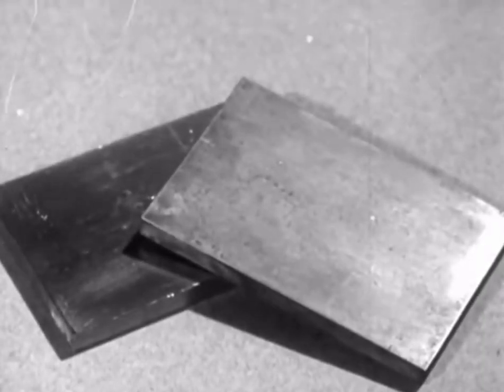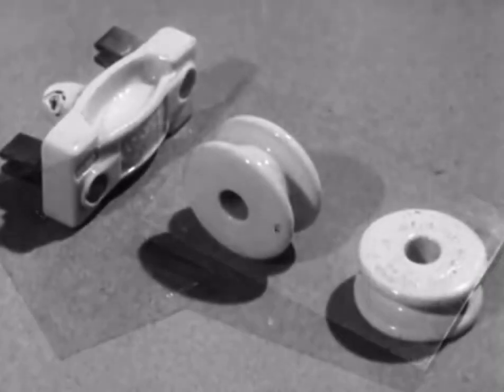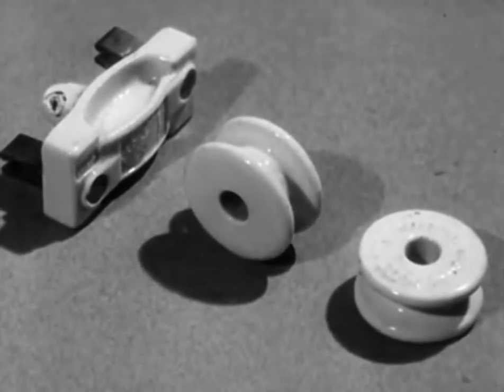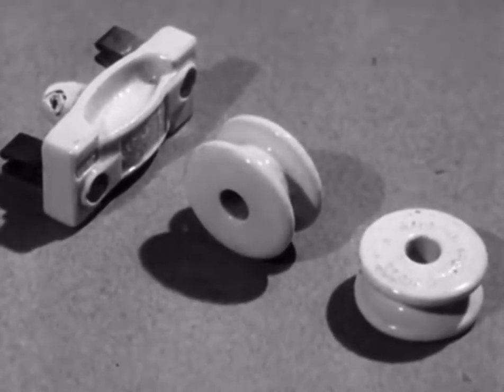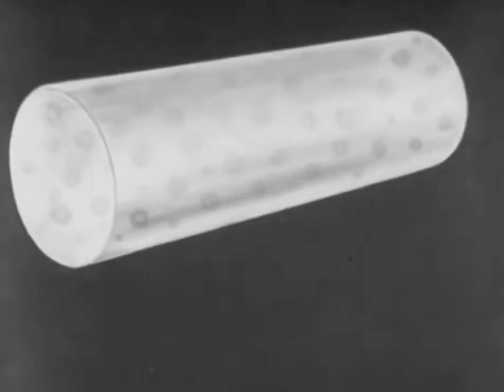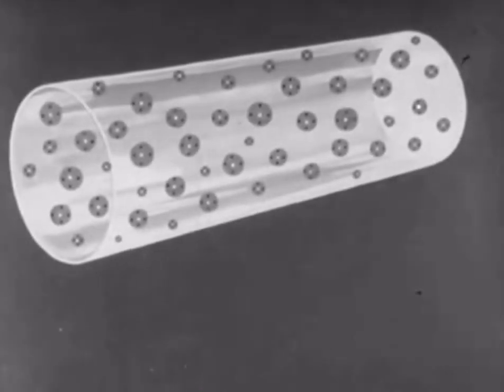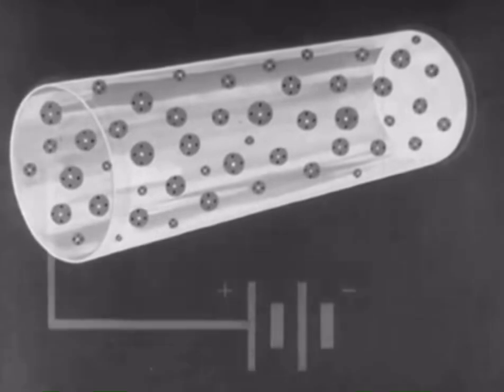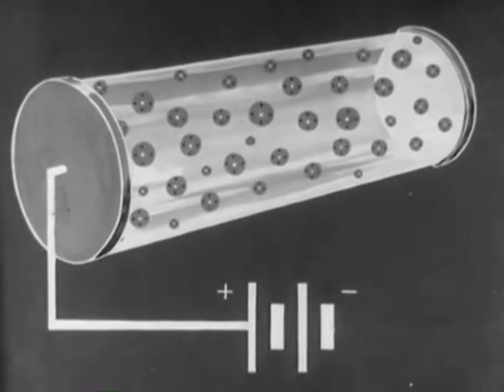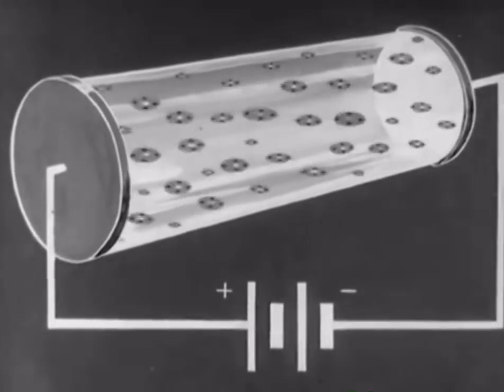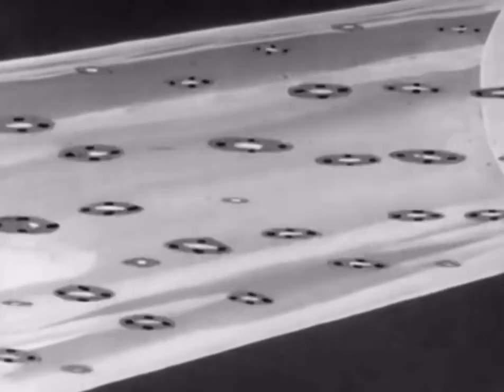Now let us consider an insulating material such as porcelain. Here the electrons are tightly bound to their atoms, and they can only be made to move with the greatest difficulty. When we connect up a battery, as we did with the copper, the atoms are under strain, but no current flows, as there are no free electrons to carry it.